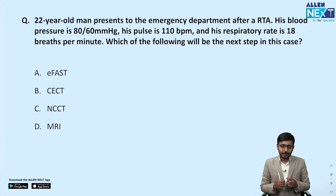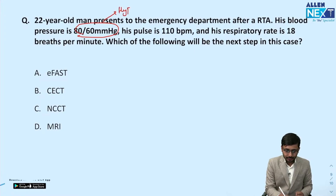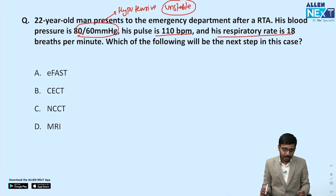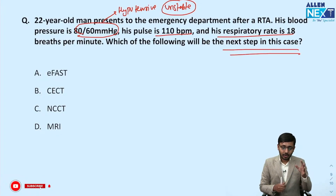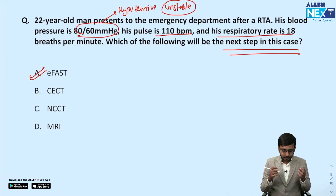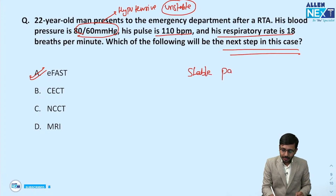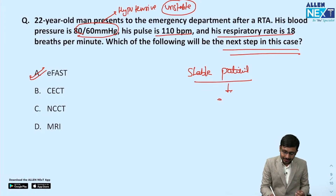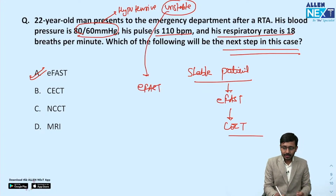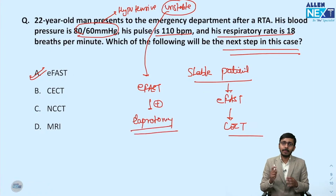The last question: a 22-year-old man presents to the emergency department after a road traffic accident. His blood pressure is 80/60, so he is hypotensive — a hemodynamically unstable patient. Pulse rate is 110, he is tachycardic. In an unstable patient after a road traffic accident in an emergency, you have to do a FAST scan to see free fluid in the abdomen. If it was a stable patient, the next step would be FAST followed by a CECT. Since the patient is unstable, we go with FAST, and if positive, proceed to laparotomy.